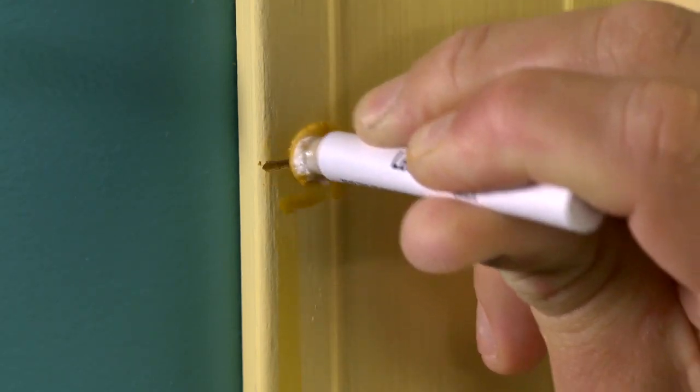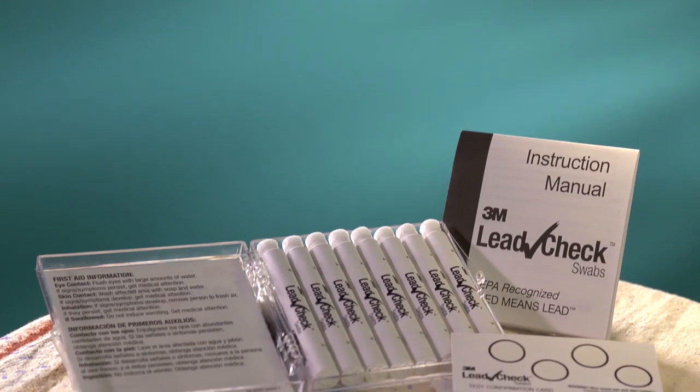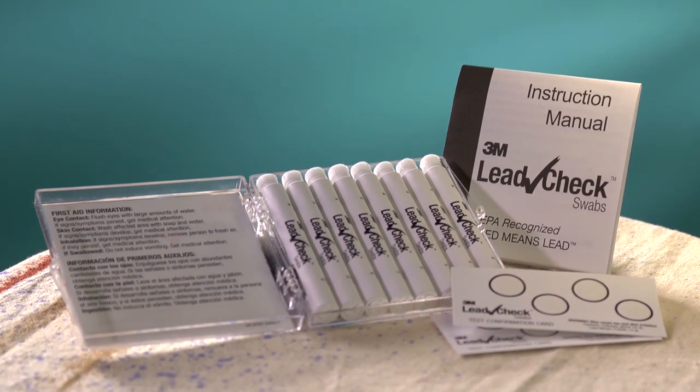This test method is for testing painted wood and metal surfaces for the presence of lead. This method is described in detail in the instructions that are in your kit.